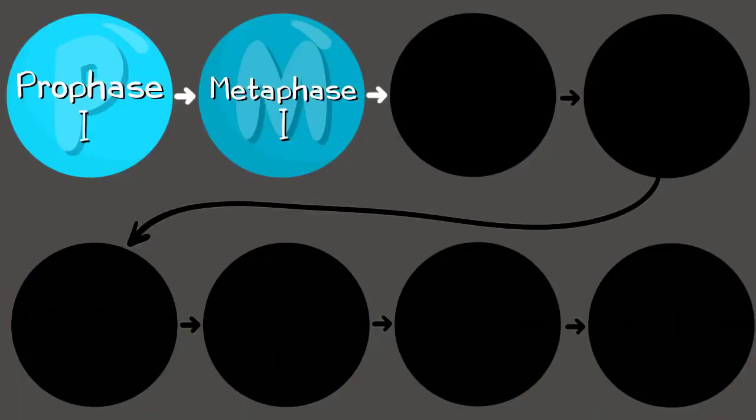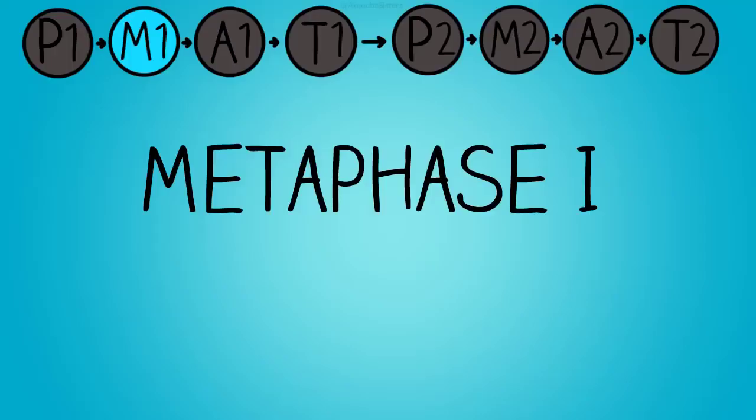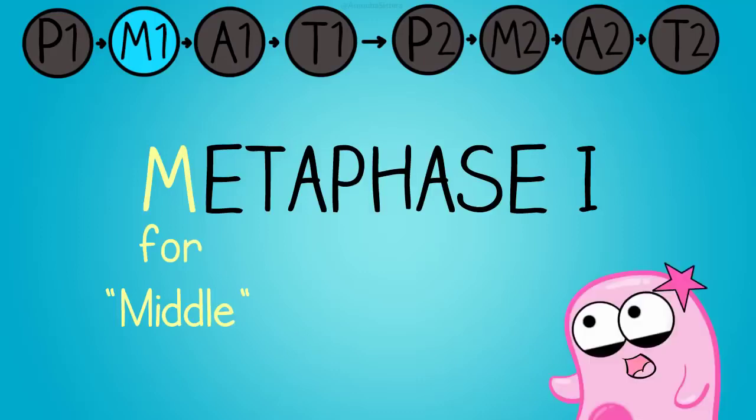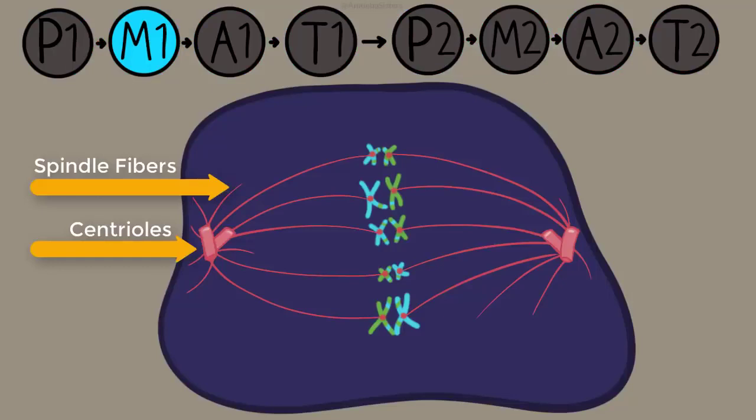Now we move into metaphase one. In metaphase one, think of the M as standing for middle. The chromosomes are now going to be in the middle of the cell. It's a little bit different though from mitosis because these chromosomes are going to be in pairs in the middle of the cell. So it's not a single file line, they're in pairs in the middle.